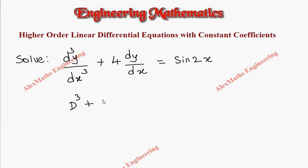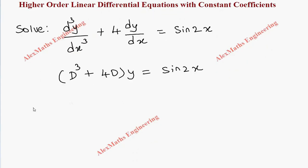Now we can take the auxiliary equation, which is m³ + 4m = 0.